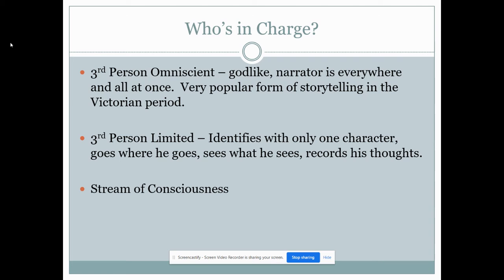Who is in charge? Different kinds of narrators. Third person omniscient would be the godlike narrator that's everywhere and all at once. This was a very popular form of storytelling in the Victorian period when novels were told with an outside narrator who would give you the truth in all forms, or at least someone that you could trust. Victorian period narrators did not deviate into unrelatable narrators. Third person limited is when the narrator identifies with only one character, goes where he goes, sees what he sees, and records his thoughts. Think of Adele Pickle — we had an outside voice, but we only really knew the character of Vera in that story.